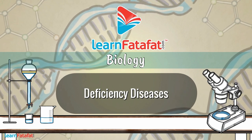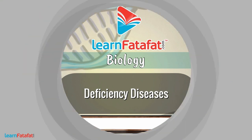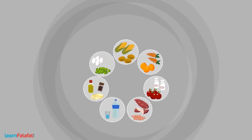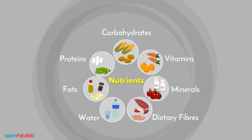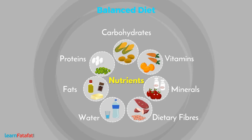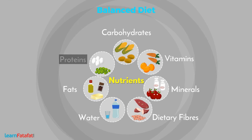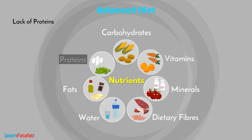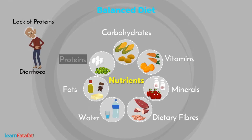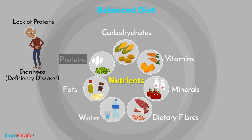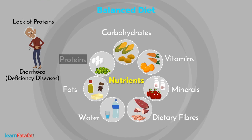Deficiency Diseases. Our food must contain all the essential nutrients in the right quantity. Such food is called a balanced diet. Sometimes a certain nutrient is missing from the diet. The lack of a nutrient in the diet over a longer period causes diseases or disorders in our body, called deficiency diseases or nutritional deficiencies. Let's have a look at some of the common deficiency diseases.